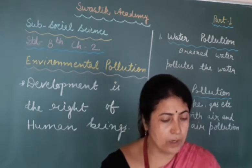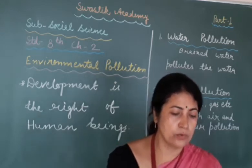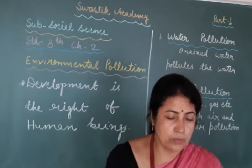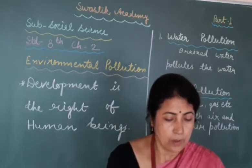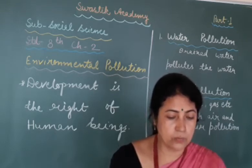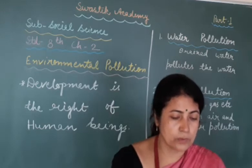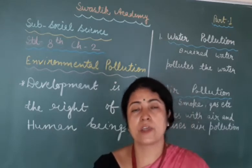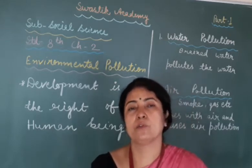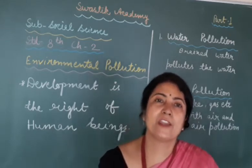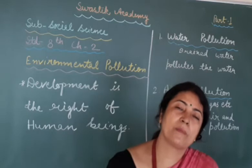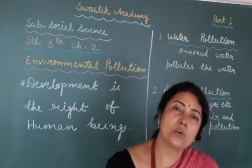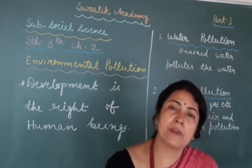Many of our rivers have become heavily polluted. This polluted river water is again used for agriculture purposes. As a result, the produce, fodder and vegetables become full of pollutants and become adulterated. People who use all this polluted water are affected.